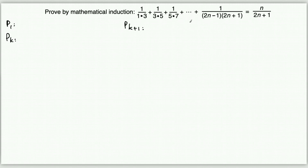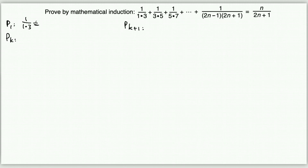There are n terms on the left side, so P(1) means the n value is one. We're talking about the first term only: 1/(1·3) on the left side. On the right side we set n equal to one, giving us 1/(2·1+1).